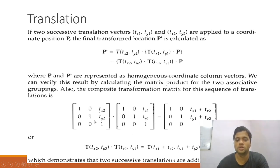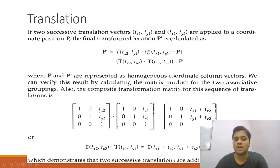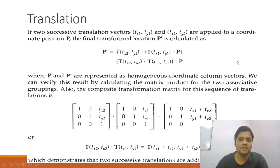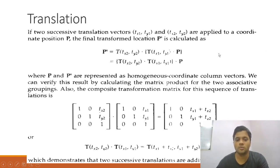So the first translation matrix is [1 0 tx1 / 0 1 ty1 / 0 0 1] and it is pre-multiplied by the second translation matrix [1 0 tx2 / 0 1 ty2 / 0 0 1]. If you have successive translations, you can directly use this composite matrix, but I urge you to follow the procedure: keep the object matrix on the rightmost side and pre-multiply in sequence.